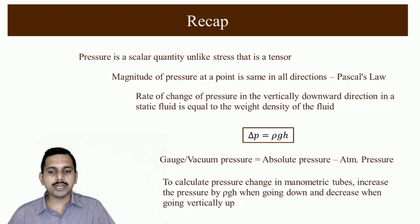Also to calculate pressure change in manometric tube, increase in pressure by rho g h happens when we go vertically downwards and when we go vertically upwards we have to negate rho g h. Then we can calculate the changes in pressure in manometric tubes.